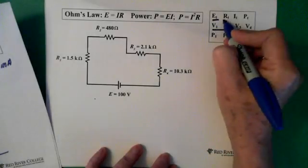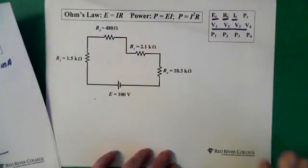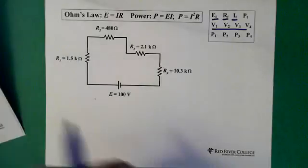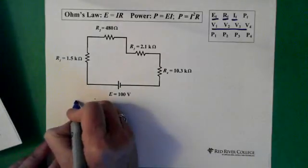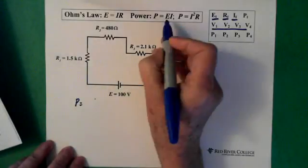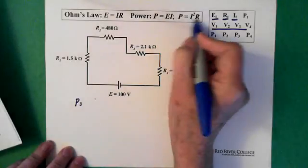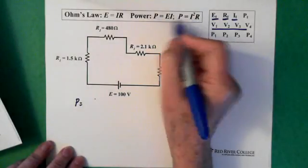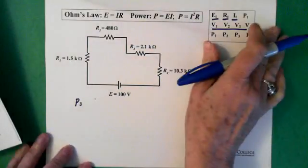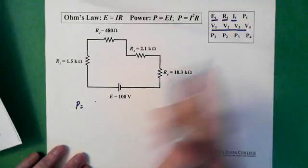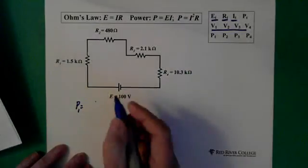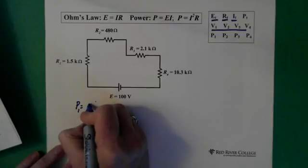So at this point we can go to the next page. We've solved all our voltages, now we're just doing power. You can use either E times I or I squared times R, it's easier to just use voltage times current so let's just do that.